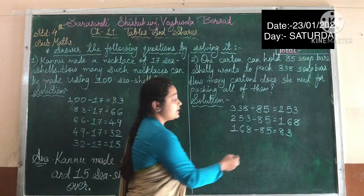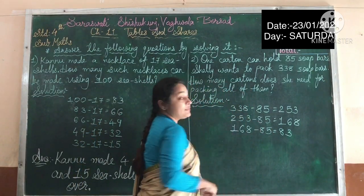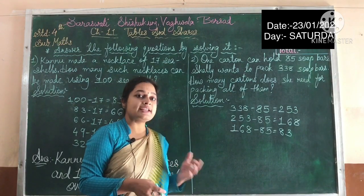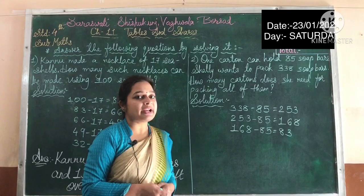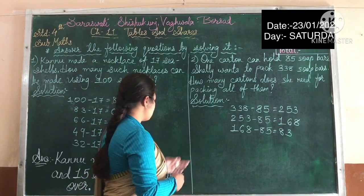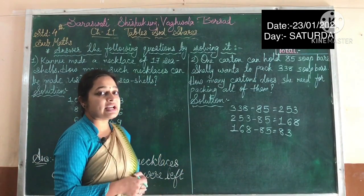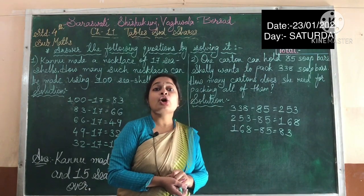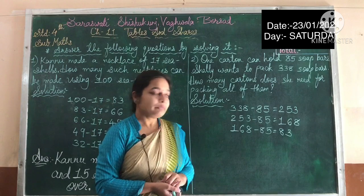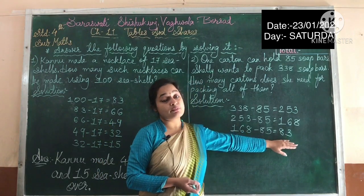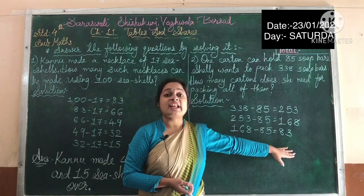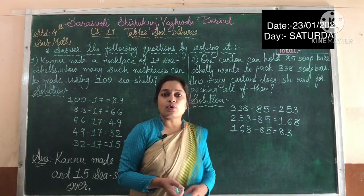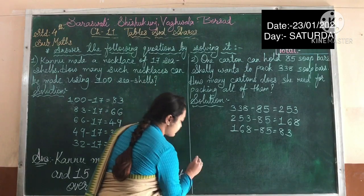Now see, 83 is less than 85, so we cannot do the subtraction. 83 is less than 85, so we cannot subtract them. Same as the first problem, we count the subtractions — that is three. So Shelley needs three cartons to pack all the soap bars. We also have to pack those remaining 83 soap bars, so Shelley needs three cartons in total.